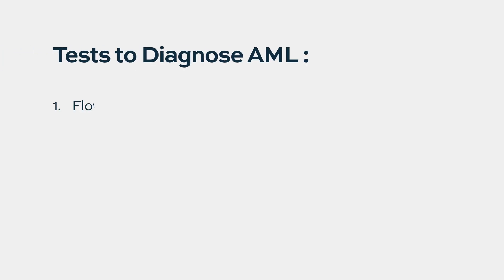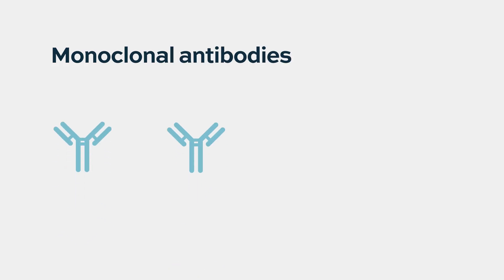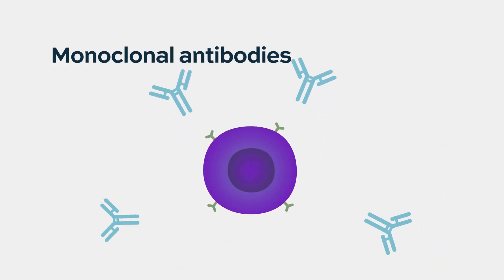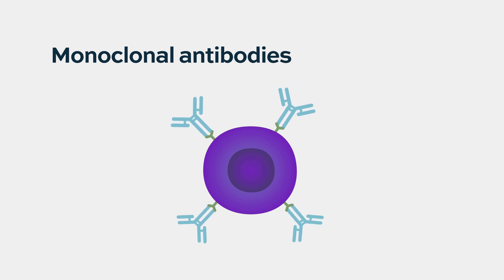In the old days, this was done more by staining with antibodies on the slide. For many years now, it's done by flow cytometry. We have a very vast panel of markers on these cells that we can identify with monoclonal antibodies — antibodies that bind to receptors on the surface of the leukemic cell. We can quantitate how many of these receptors exist per cell.